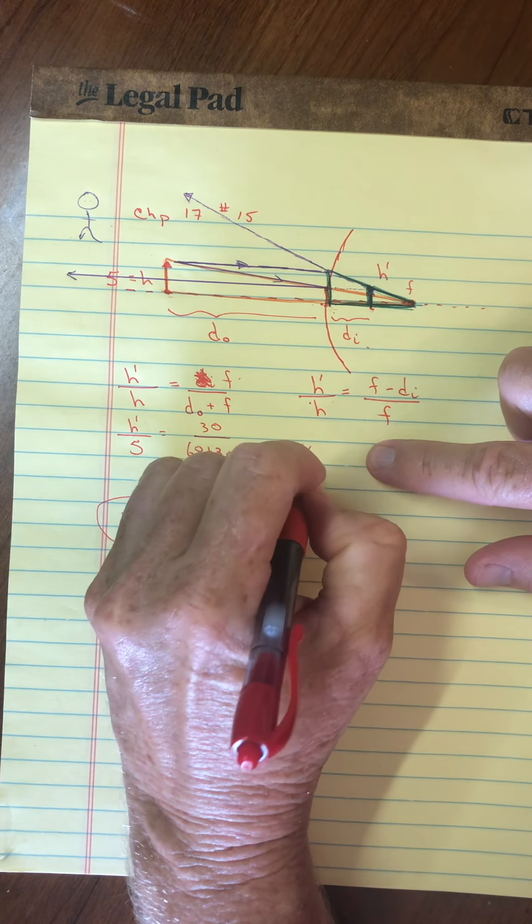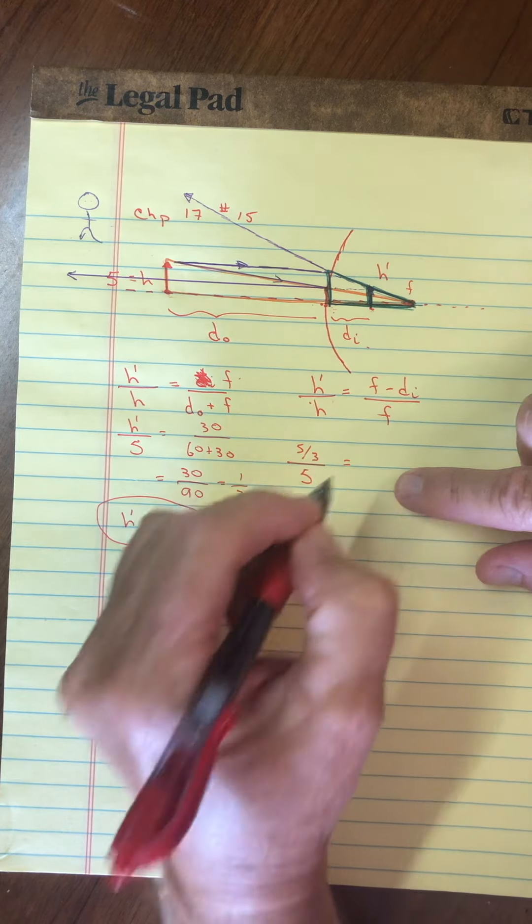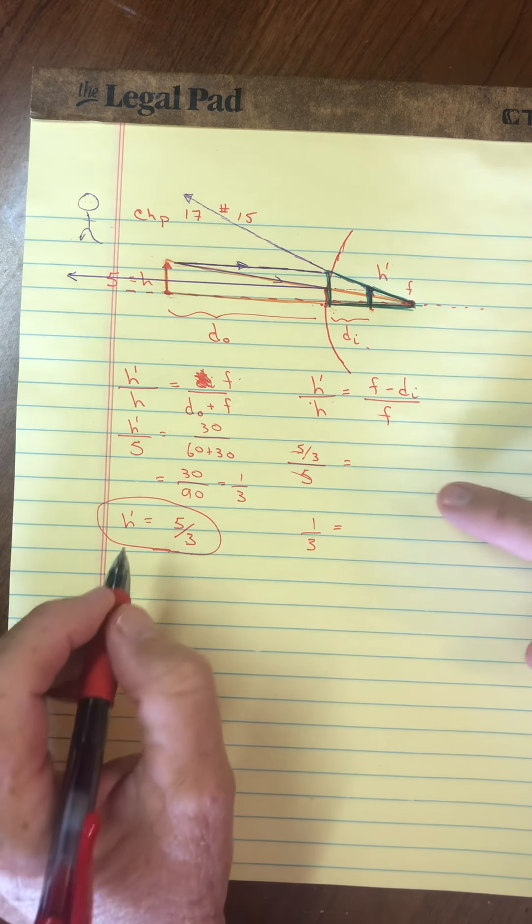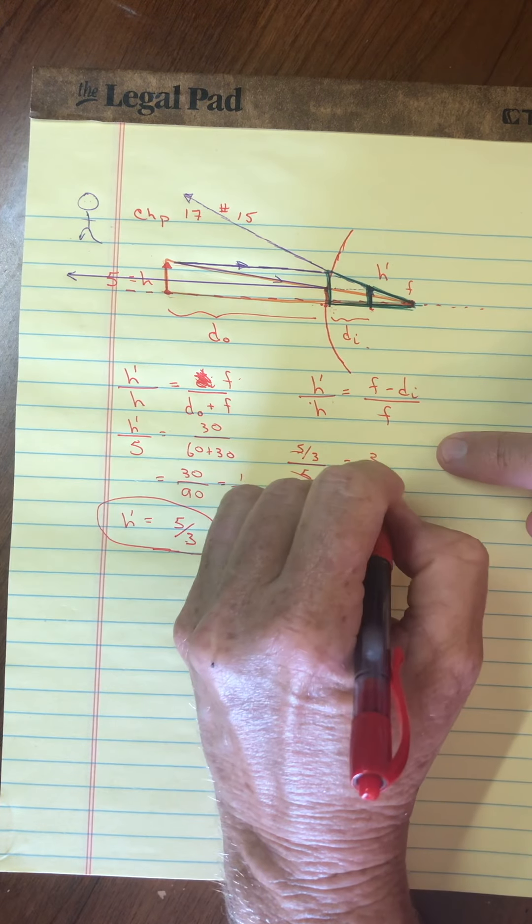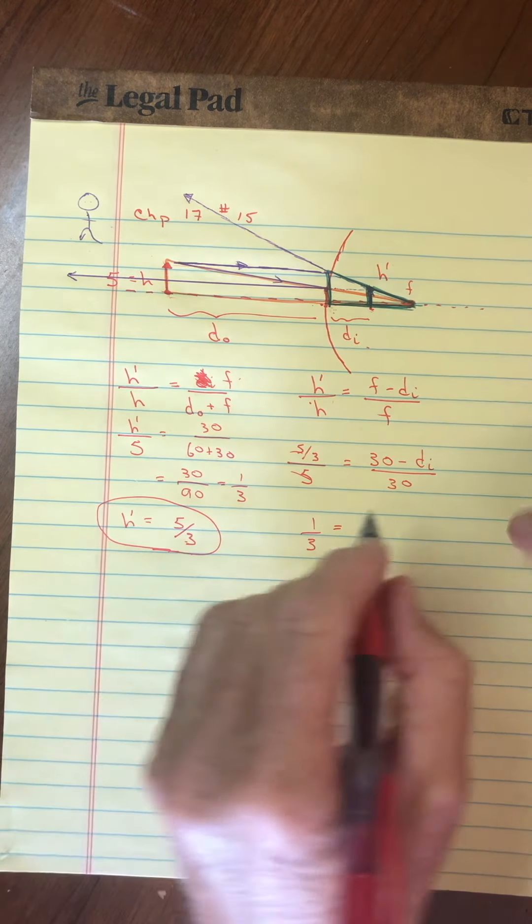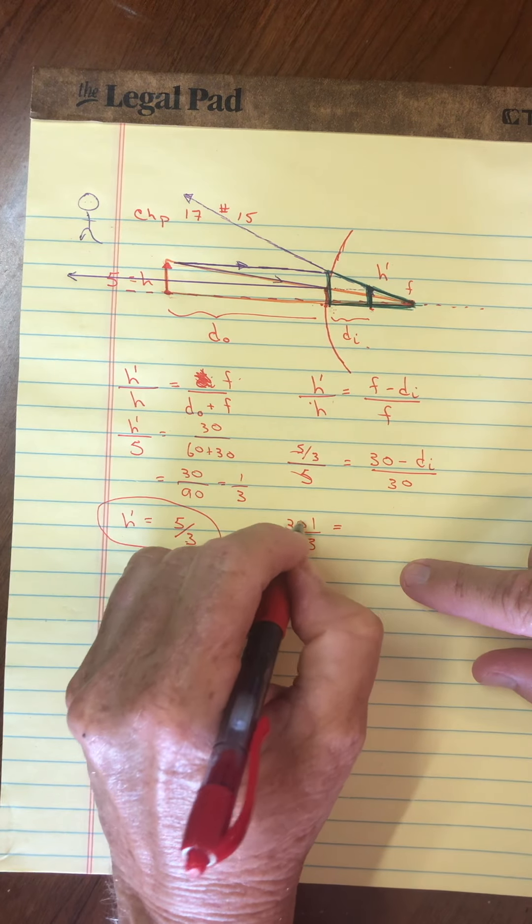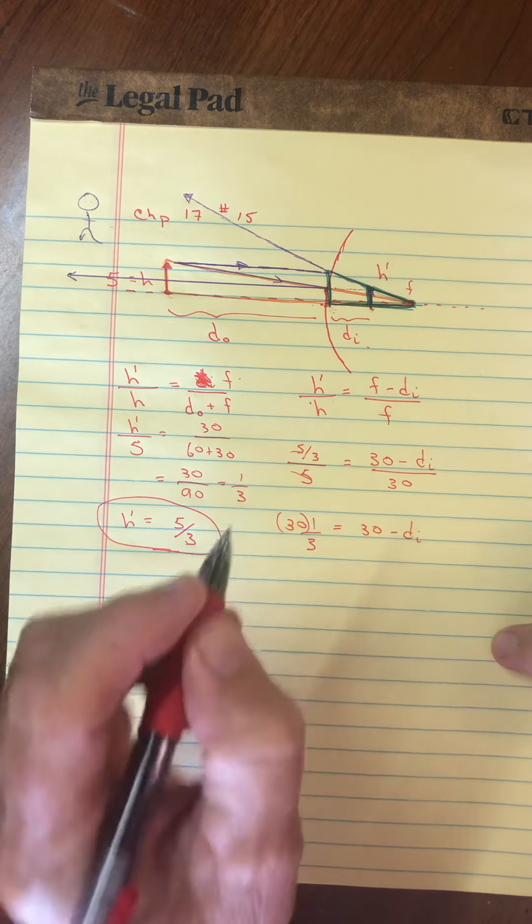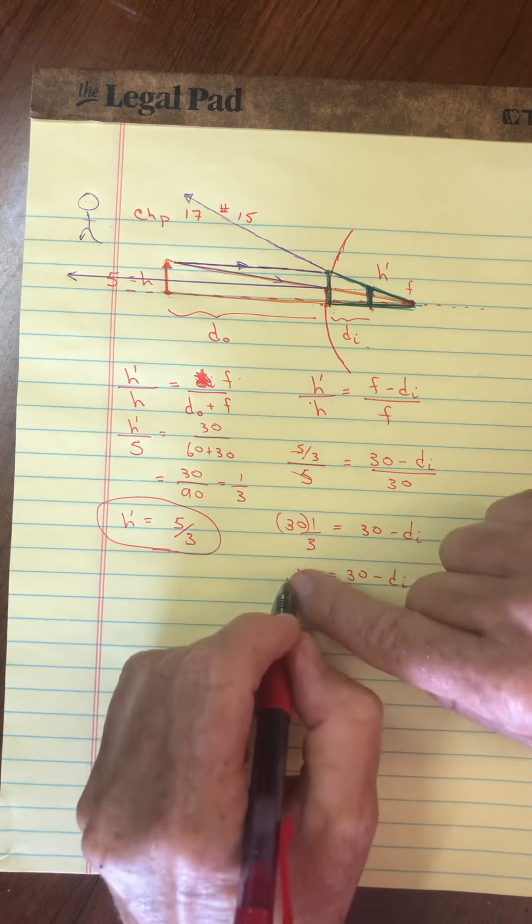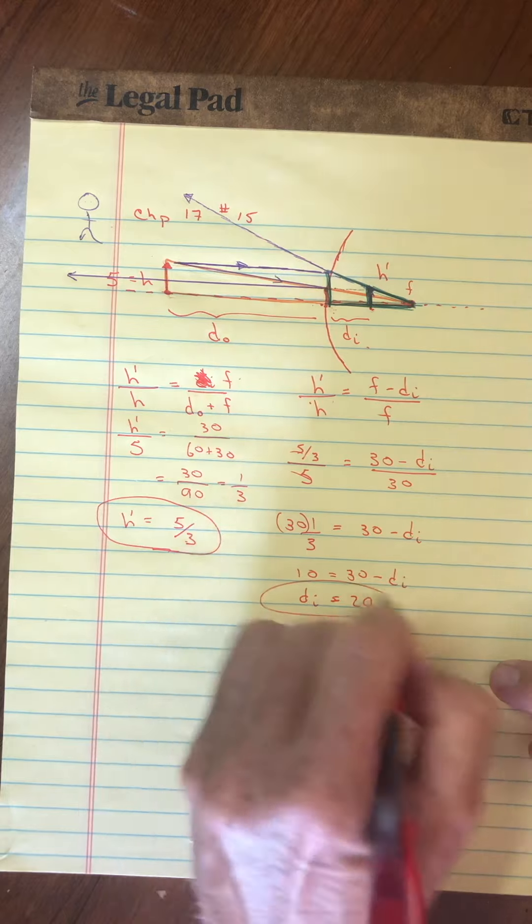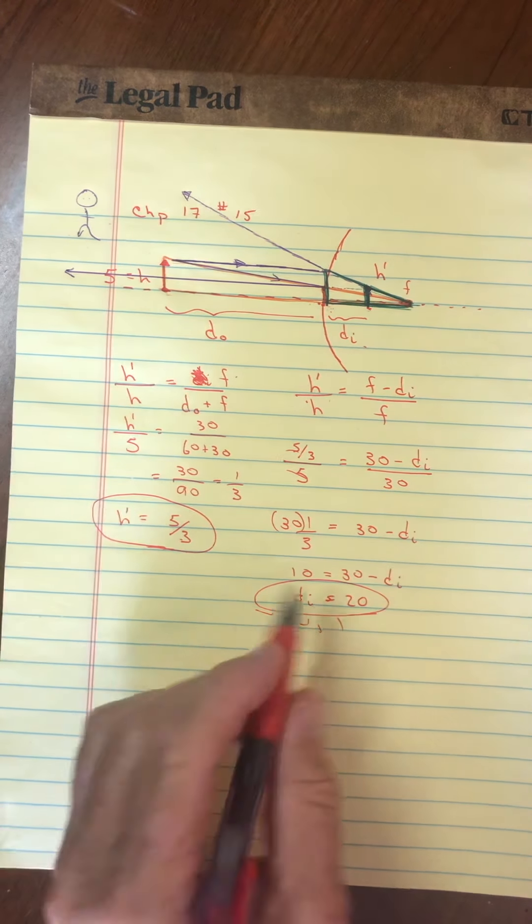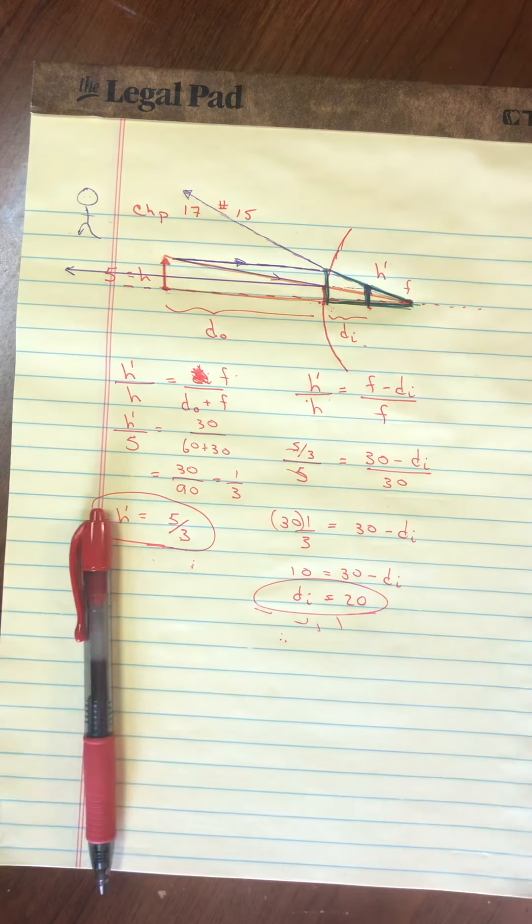So then when I come over to here, I can put in the height of the image. That's five-thirds over the height of the object, which is five. And so that's going to reduce to one-third. And then I'll have the focal length, which is 30 minus the image distance over 30. So if I bring this 30 to the other side, and then I get 30 minus the image distance, that right there would be 10. And then if I bring image distance to the other side, I get 20. So that's the answer they want. Where is it located? 20. And then this is its height of the image. All right. Hope that helped.